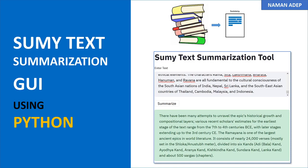Hello everyone. In this video we are going to summarize text using Python. For this we are going to use a Python package known as sumy. And for a graphical user interface we are going to use a package known as streamlit. By using streamlit we are going to take our program and host it on a website.